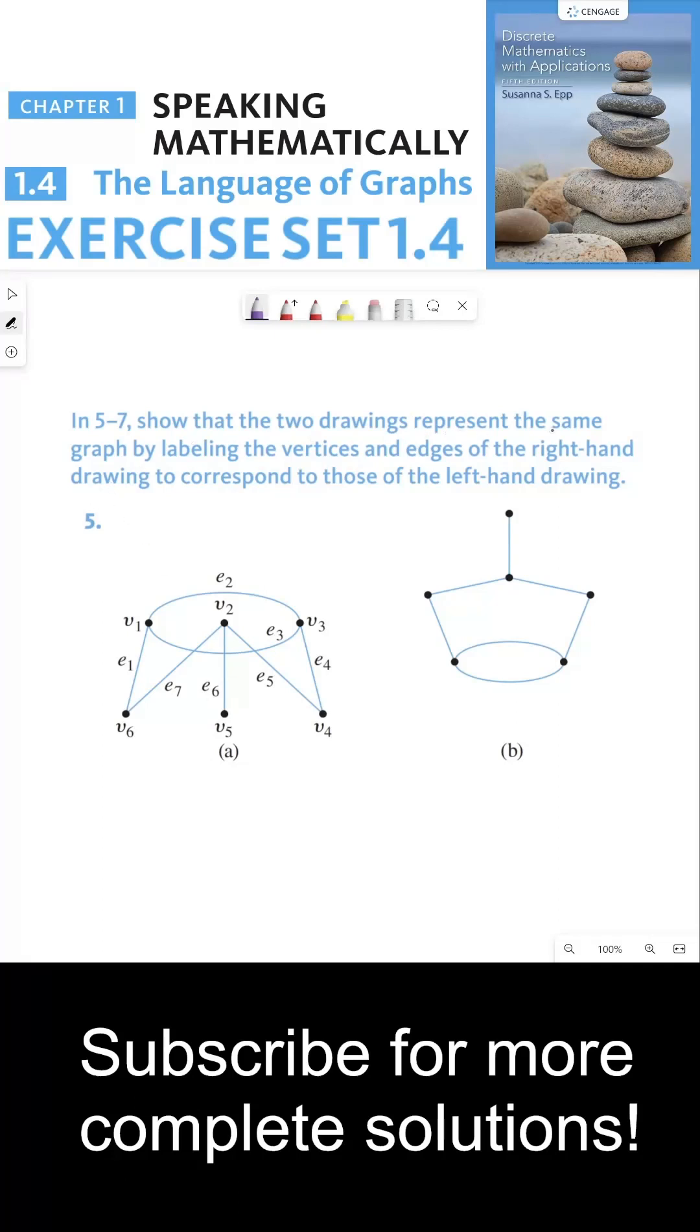In this video we need to show that the two drawings represent the same graph by labeling the vertices and edges of the right-hand drawing to correspond to those of the left-hand drawing. So in other words, we need to show that these two graphs are the same, or in other words, that they are isomorphic.